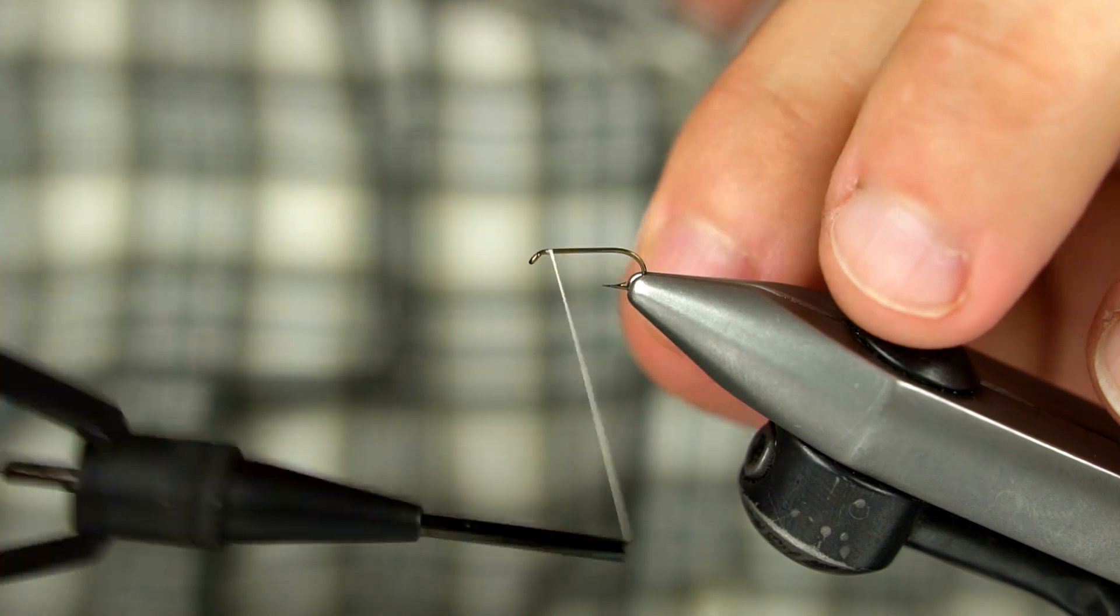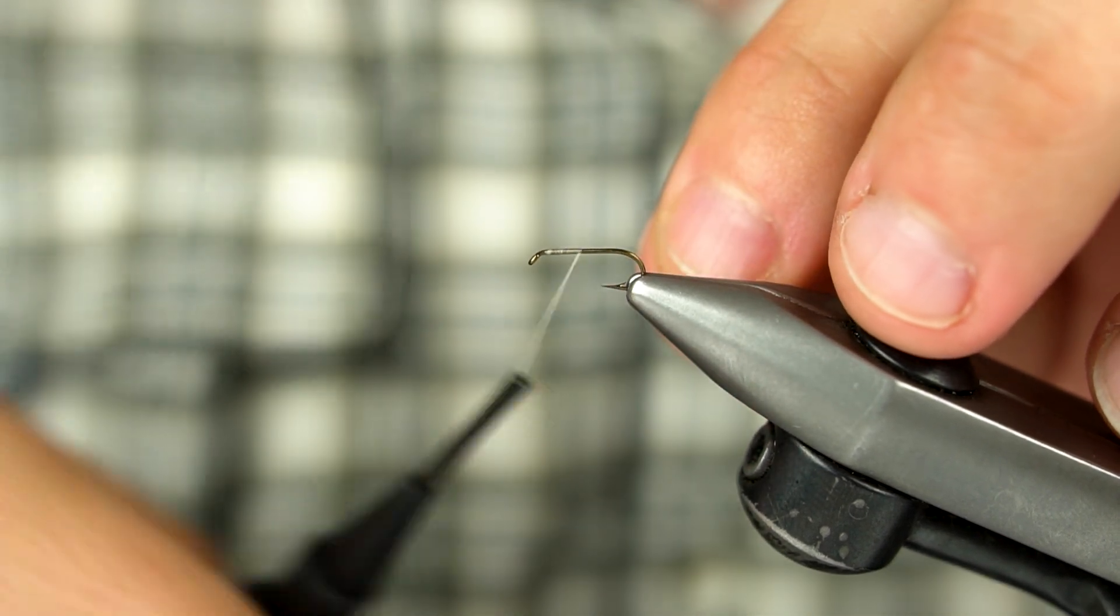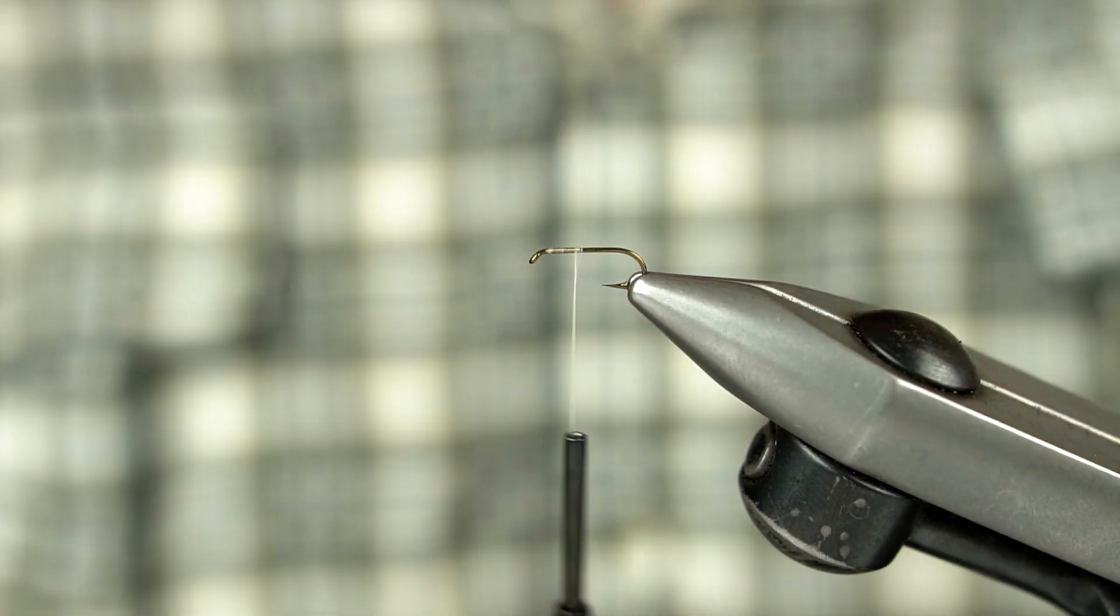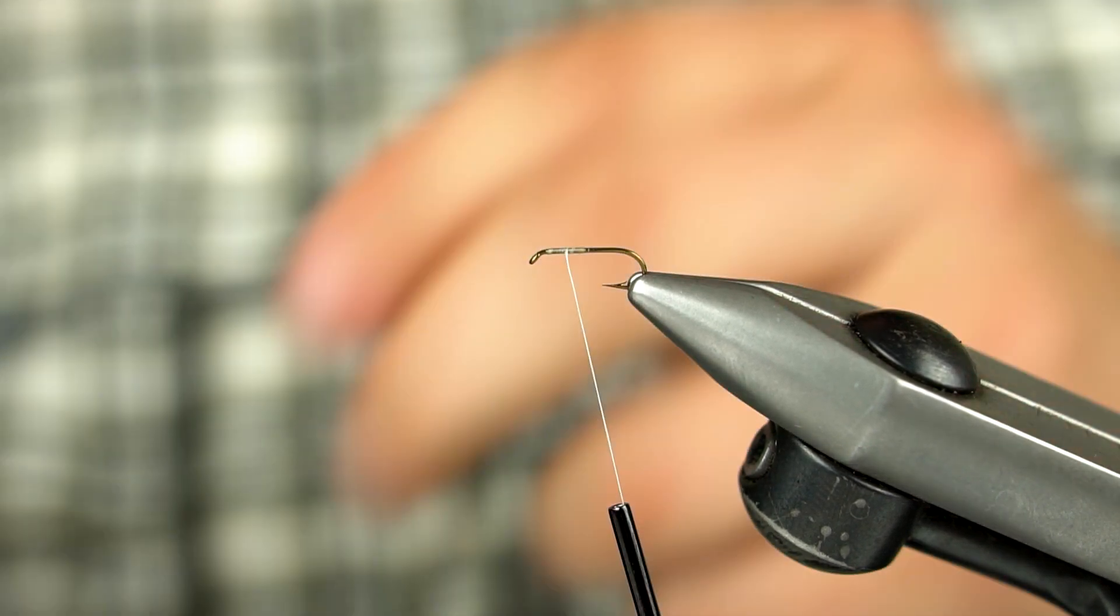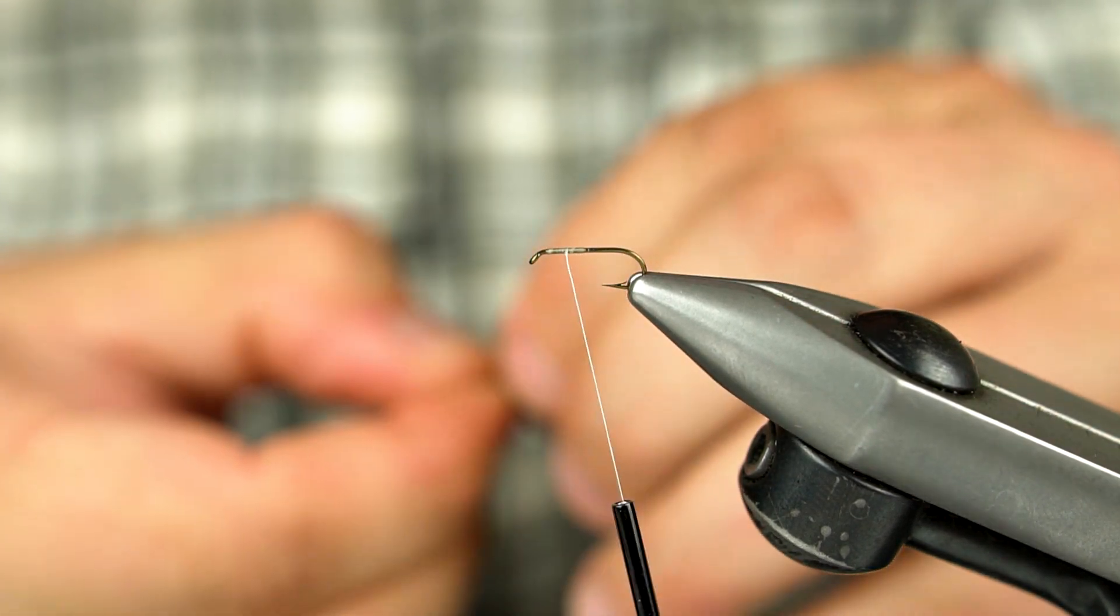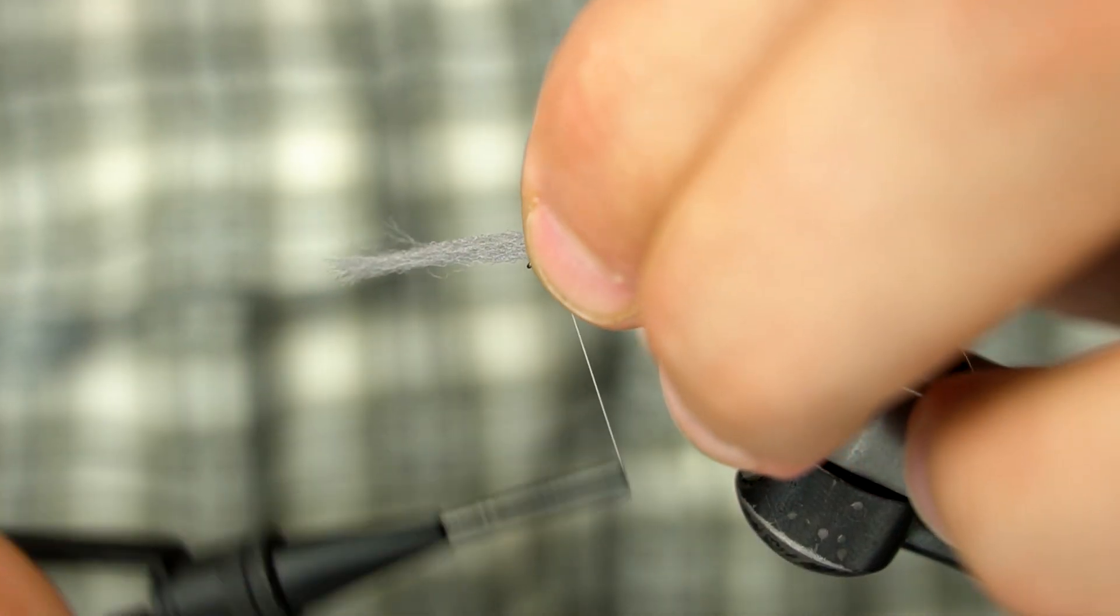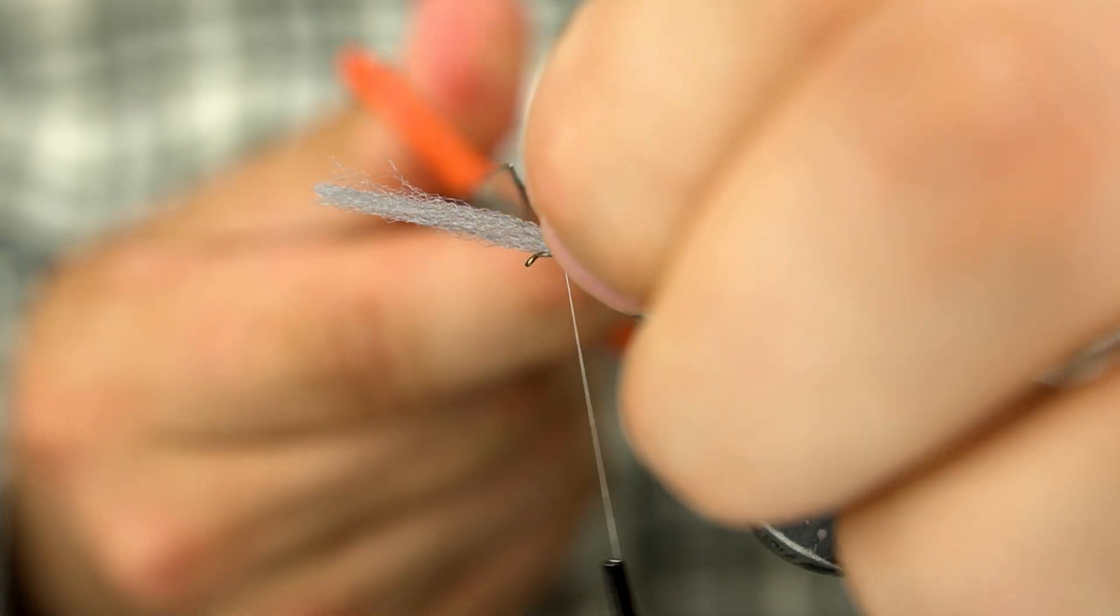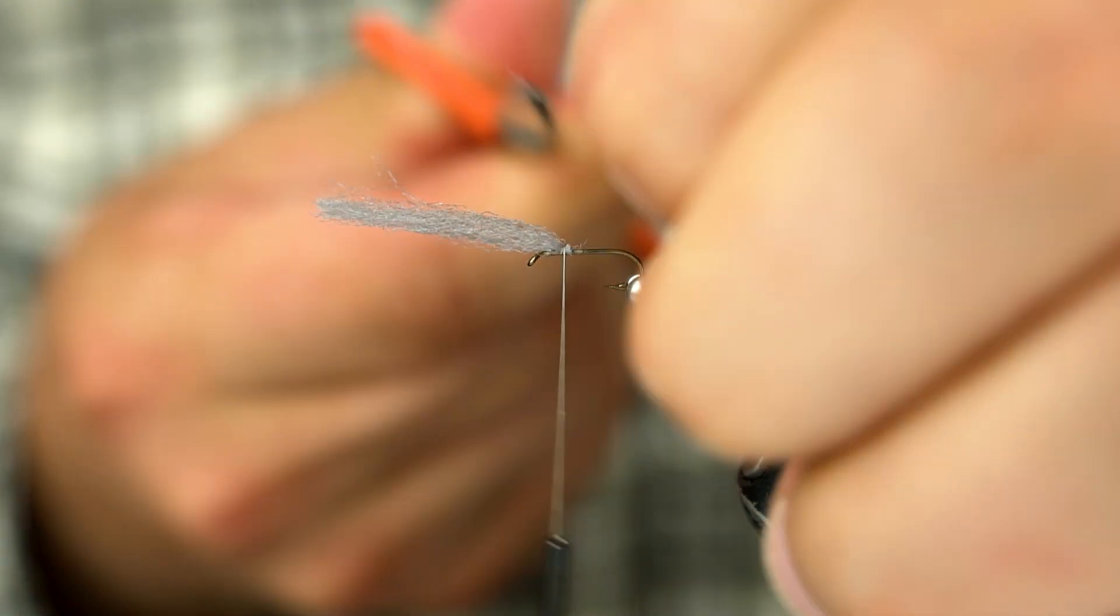Let's start by putting down a thread base on the hook under where the wing will be tied on. Taking a section of poly yarn, secure it to the shank so it points forward on the hook. Clip the butts and then take a few tight turns in front of the wing to lift it up.